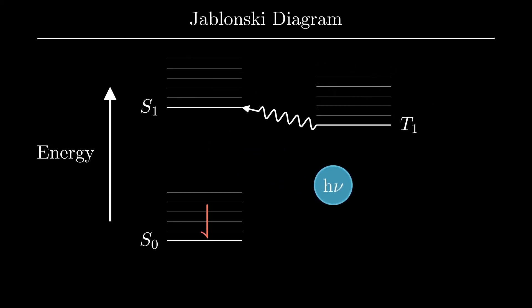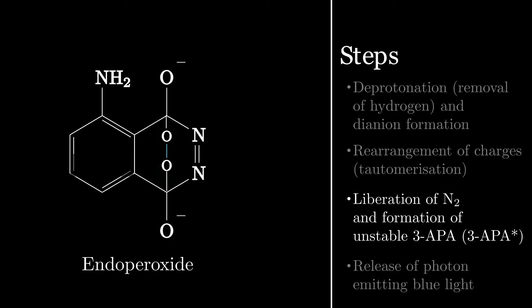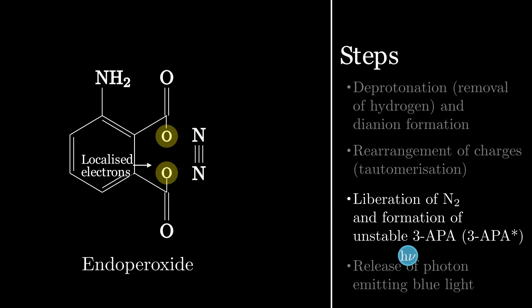Over time, the electrons settle down around the oxygen atoms, and due to now being less excited, release the excess energy in the form of the blue photon. This might seem like a bit of an oversimplification, but that's basically the gist of what's happening. I've linked a few papers in the description if you want a more in-depth explanation.